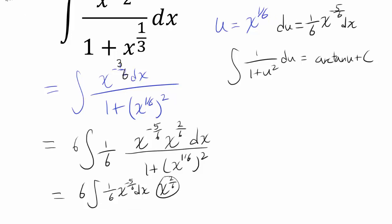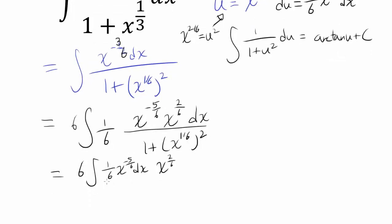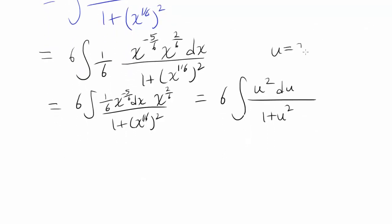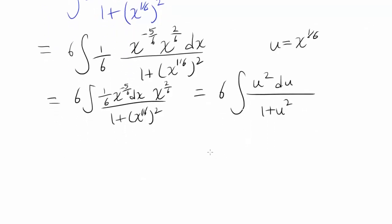What do we do with x to the 2/6? Well because u is x to the 1/6, x to the 2/6 is u squared. So we have, let's try to simplify this divided by 1 plus x to the 1/6 squared. We have 6 times integral of u squared times du divided by 1 plus u squared. So this thing came out to be this and let's remember u was x to the 1/6 power.